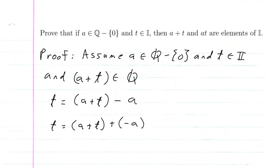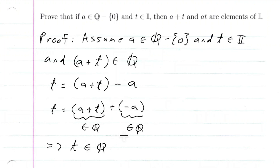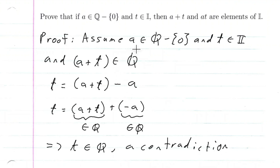If A is rational, then negative A is rational. So we have a rational number plus a rational number, and we know the sum of rational numbers is rational. This implies that T is rational. But we assumed that T was irrational — and this is our contradiction. So the sum of A and T must be irrational.